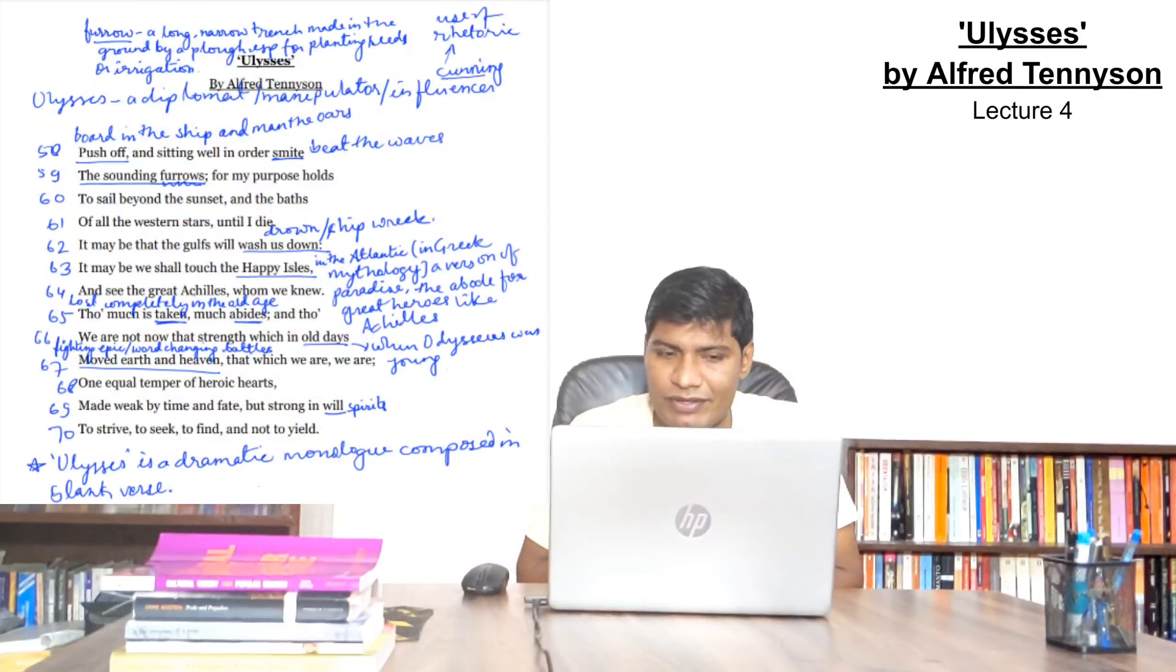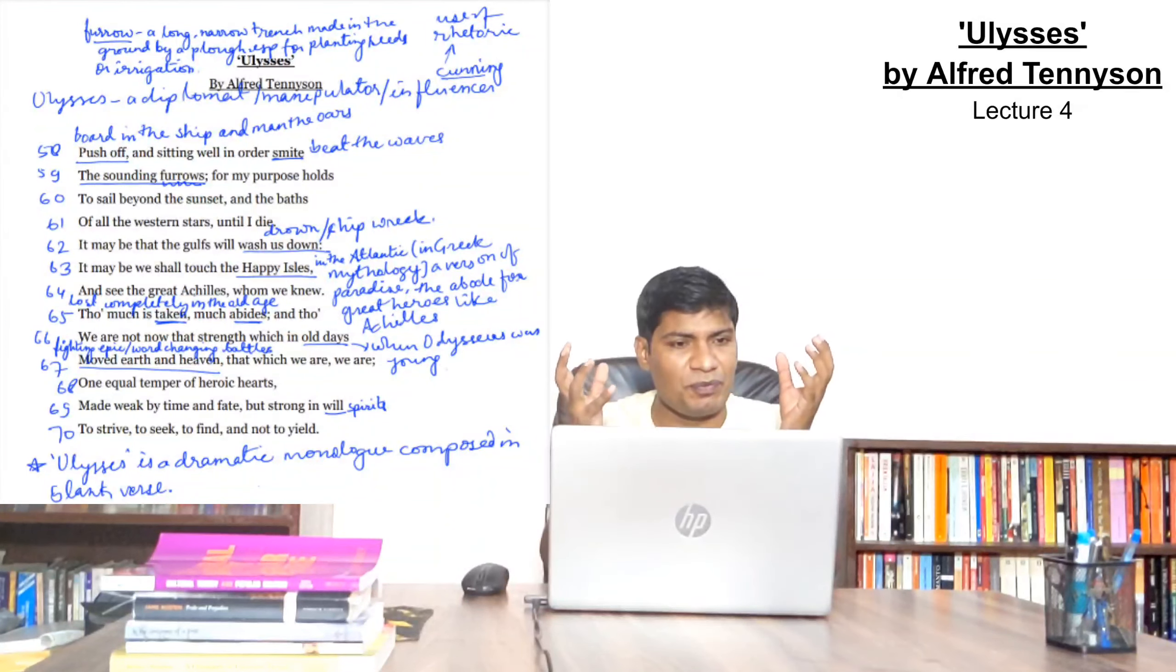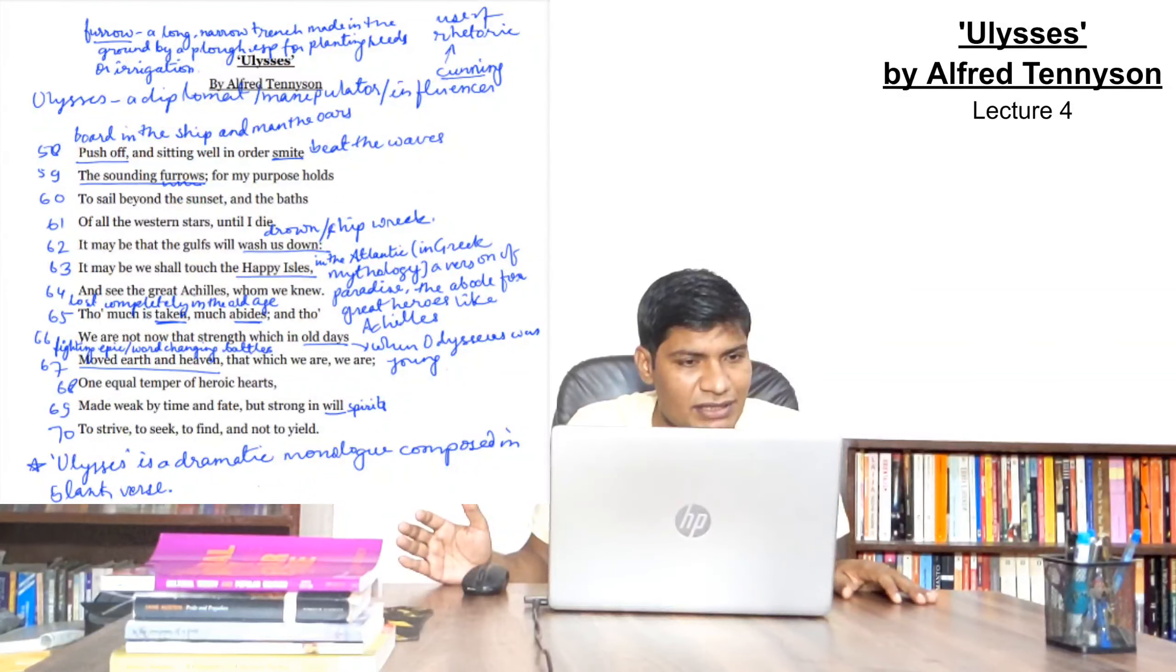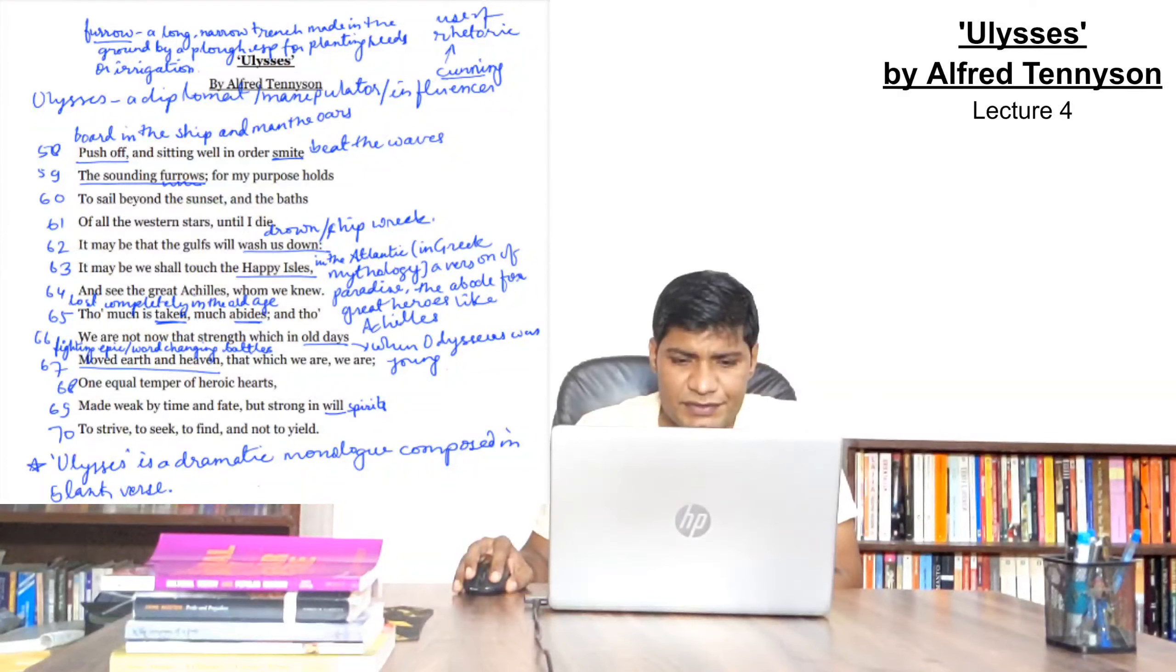As I gave you one example from Passing of Arthur, when Tennyson says, the old order changeth, giving place to the new, yielding place to the new, lest one good custom should corrupt the world. Order should be continued, order should be maintained, order should not be violated. There it is monarchical order, there it is democratic order, it should have a balance. Order is very important when he is talking about this ship in which Ulysses and his friends they have boarded in. And it will sail with balance.